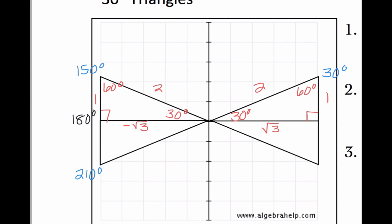When I have 210 degrees, I'm still trying to figure out how far away we are from the closest x-axis. 210 minus 180 gives me 30, so this is going to be 30 degrees. So I have negative 1, and the reason why this is negative this time is because from the axis, it's going down. It's going to be negative radical 3 still, and our hypotenuse is always positive — with a pen instead of a highlighter, we get 2.